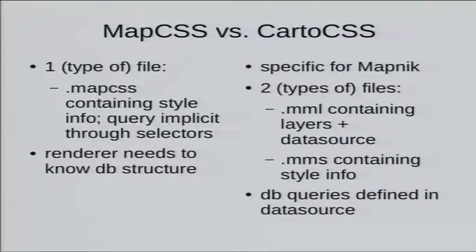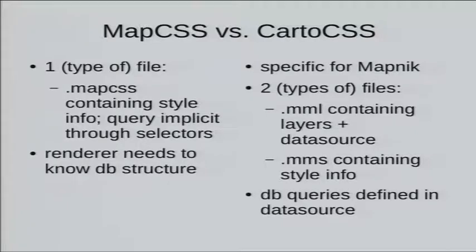CartoCSS is more or less the old XML file but in CSS. You always need two files: a .mml file, which contains the layers like in the MapNIC style, and an .mss file, which contains style info — but those style infos are always connected to the layers. In the layers you have to specify a data source, which lets you use the usual data sources MapNIC knows: shapefiles, GeoJSON, PostGIS database. But you always have to define the database query in this data source, which can get quite complex for some layers.